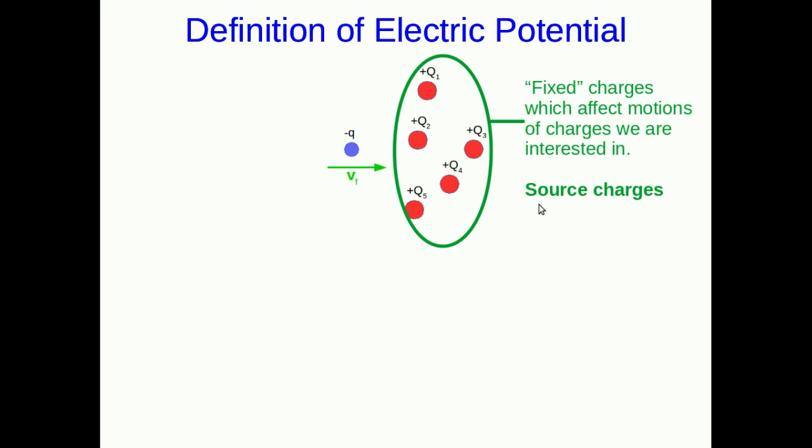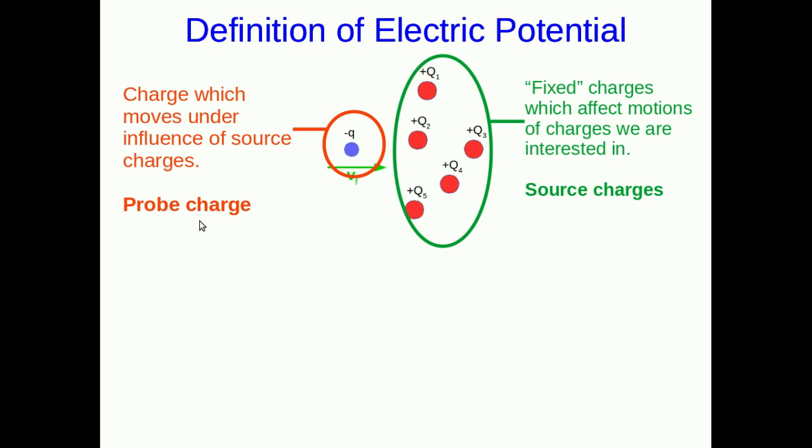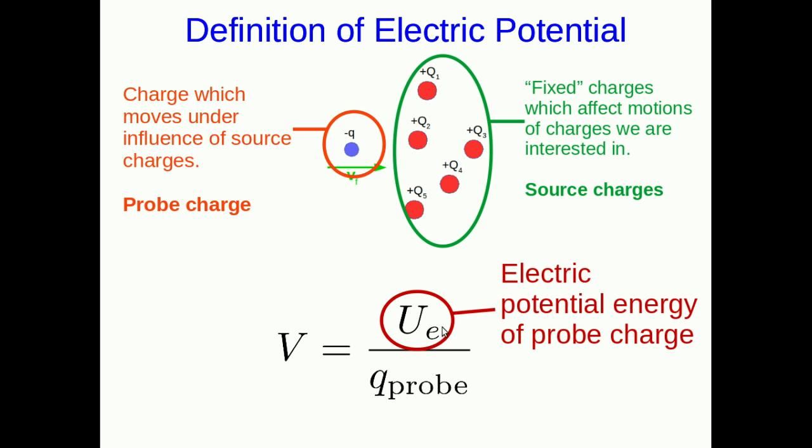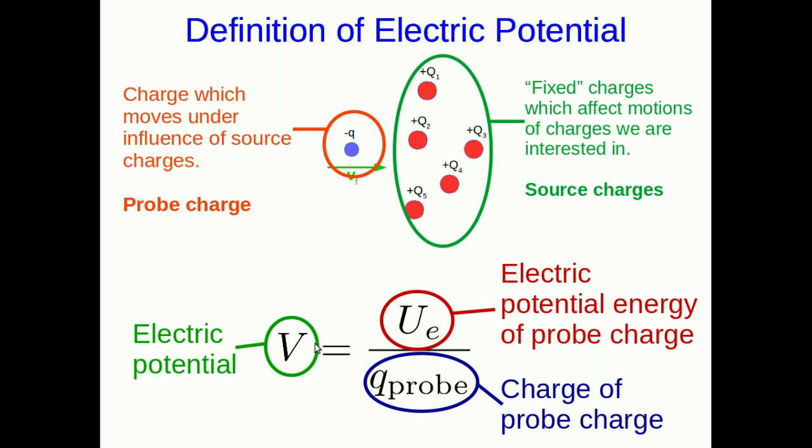I hope this is ringing some bells from the last unit in the course. Here is this moving charge. It moves under the influence of these source charges, so we could call it a probe charge. We define the potential this way, where this U_e is the electric potential energy of the probe charge. That's using that lazy use of language I just pointed out. This is its charge, and this V here is the electric potential.